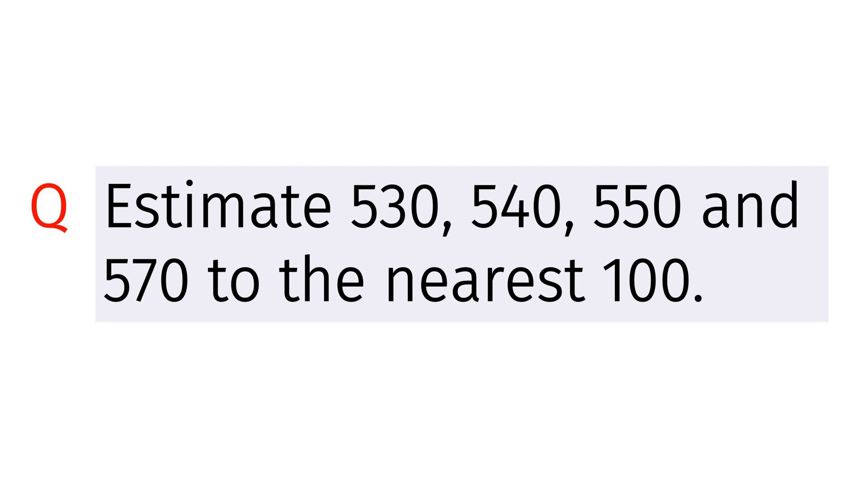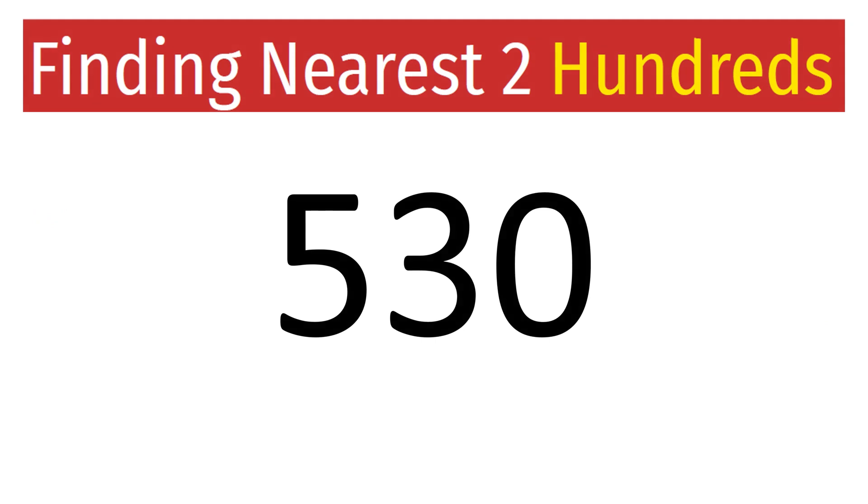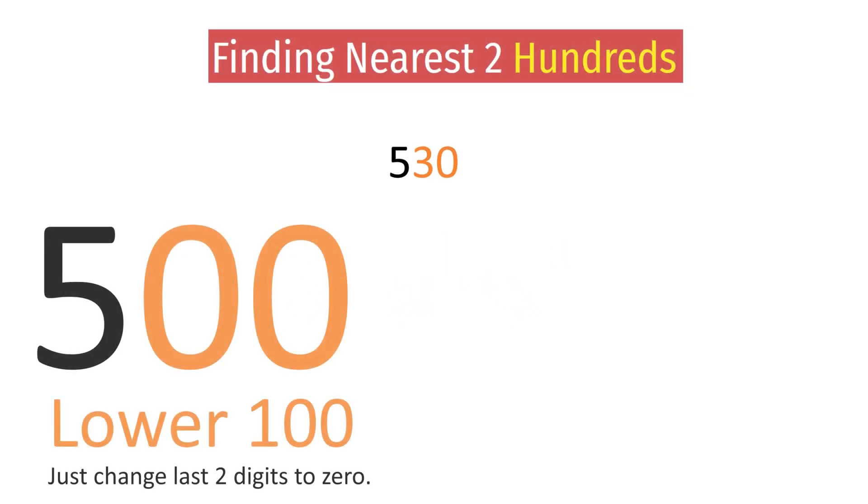Let's take the first number 530. Let's take the last two digits. Changing the last two digits to 0, we get the lower 100, which is 500.